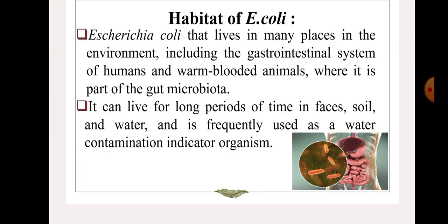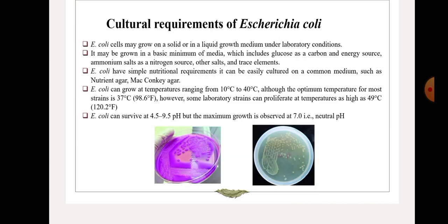Moving to the next slide — habitat of E. coli. E. coli can live in many places. We all know that bacteria are present everywhere in the world. E. coli lives in many environments: soil, sand, water, etc. Basically, the habitat of E. coli is the gastrointestinal system of humans and warm-blooded animals, where it is a part of the gut microbiota. It can live for long periods of time in fish, soil, and water, and it is frequently used as a water contamination indicator organism.